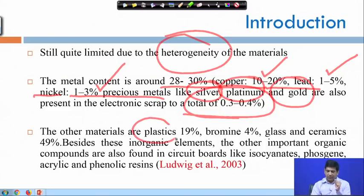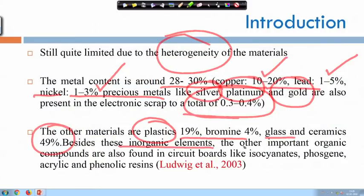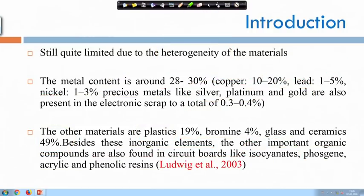Other phases include plastics with about 90 percent bromine, 4 percent glass, and ceramics. Ceramics can be recovered as well and there has been a lot of use of recovered ceramics in different applications — for example, in membranes for microbial fuel cells and MBR in wastewater treatment. Other than that, we have several inorganic elements and organic compounds in circuit boards like isocyanate, phosgene, acrylic, and phenolic resins — all materials with potential for recycling and reuse.